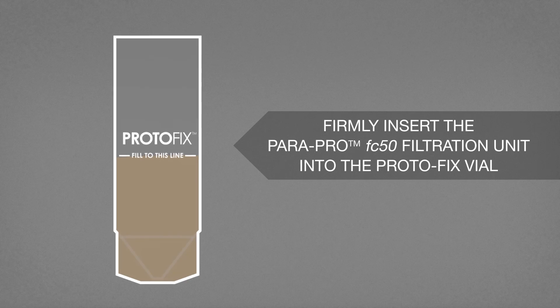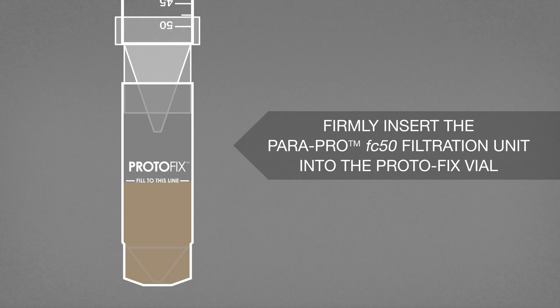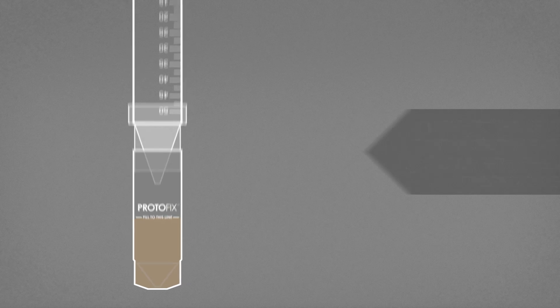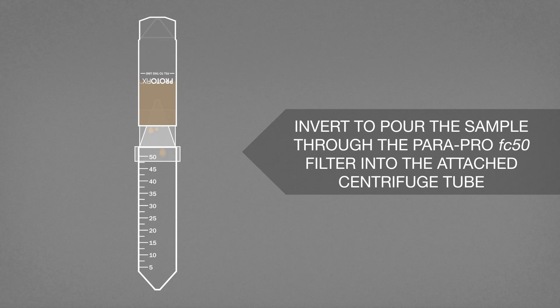Firmly insert the ParaPro FC50 filtration unit into the Protofix vial. Invert to pour the sample through the ParaPro FC50 filter into the attached centrifuge tube.